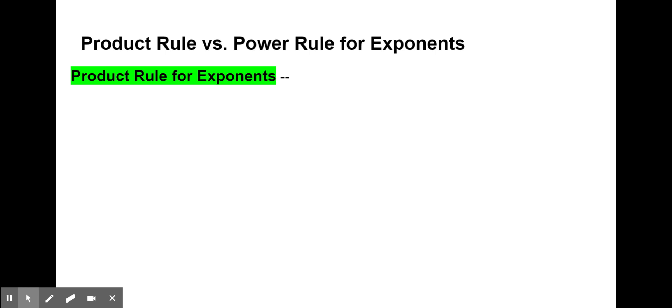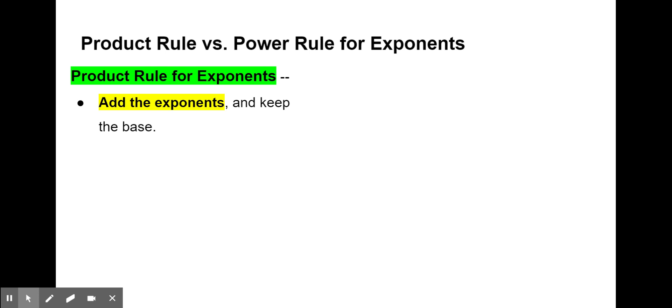Let's do a quick review of product rule versus power rule for exponents. Let's take a look at product rule first, and then we'll take a look at power rule right next to this. So for product rule of exponents, what we're going to do is add the exponents. We're keeping the same base, and we're going to just add the exponents. That's the shortcut for product rule.